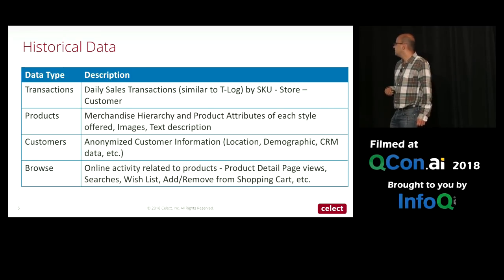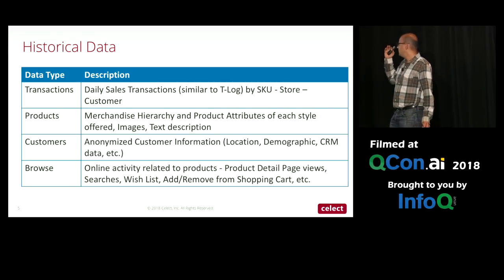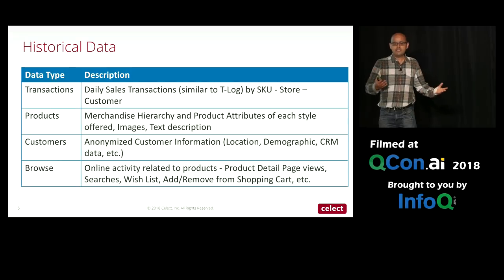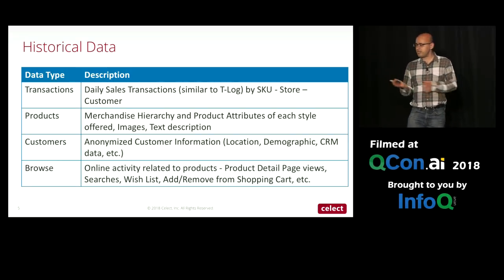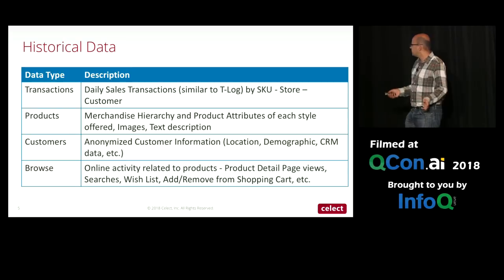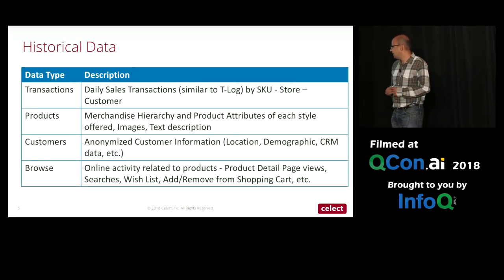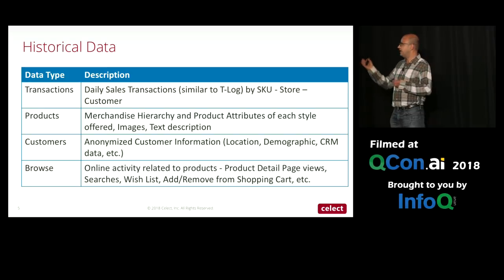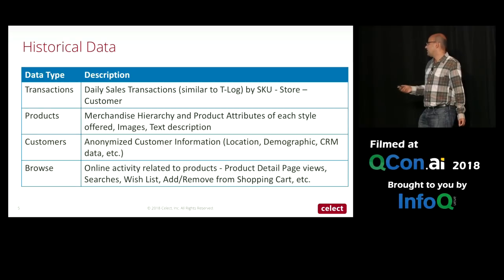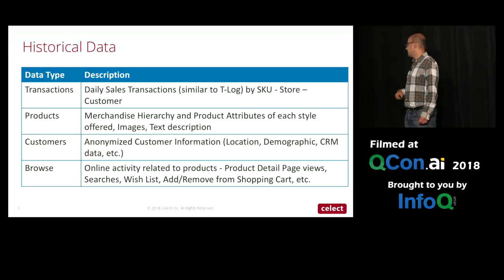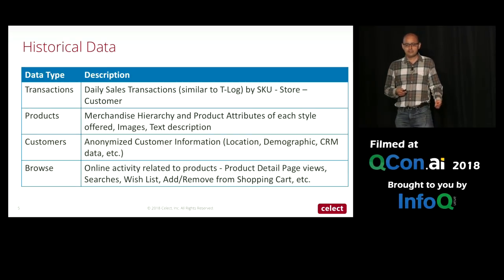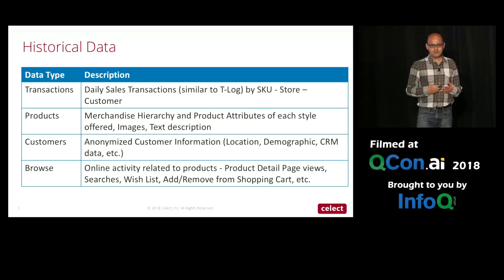The second data source is the products themselves: attributes, hierarchy, images, and text — all relevant to predicting demand once merged with transactions. There's also customer information: anonymized location, demographic, and so on. You can tie that to the transactions to see what sort of customers are interested in what sort of products, and use that to project demand.